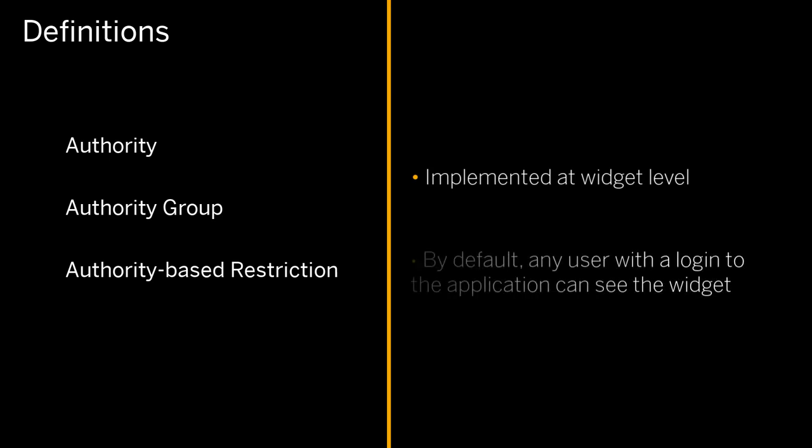By default, when you add a new widget to a cockpit, any user with a login to the application will be able to see that widget. If you would like to limit which authorities can view a widget, you can specify that in the widget's settings. With authority-based restrictions, you can build entire cockpits and mashups that are specific to one or more authorities. When users log in to the application, they only see the cockpits and widgets that they have permission to view based on the authority groups to which they belong.